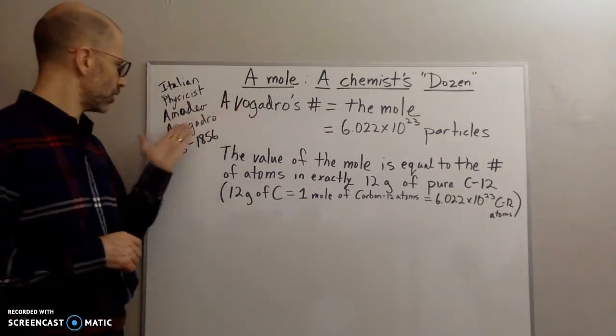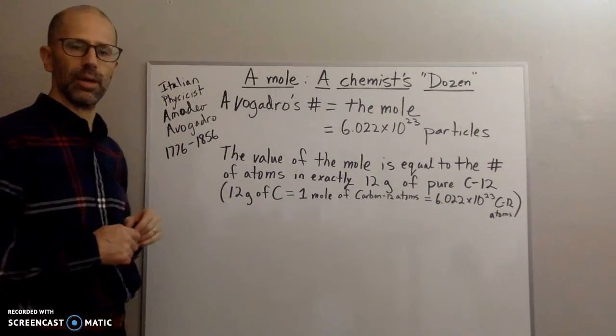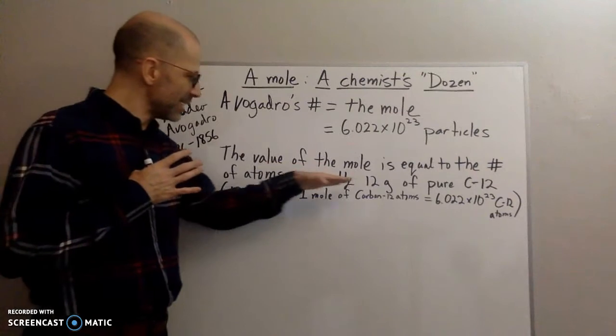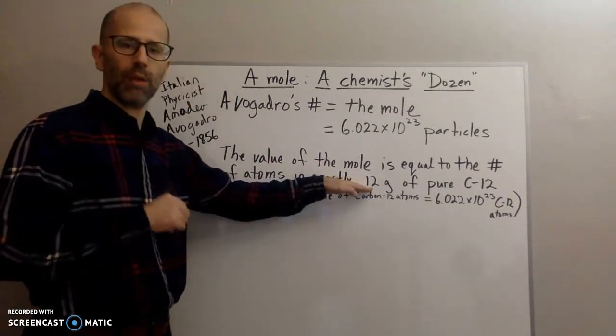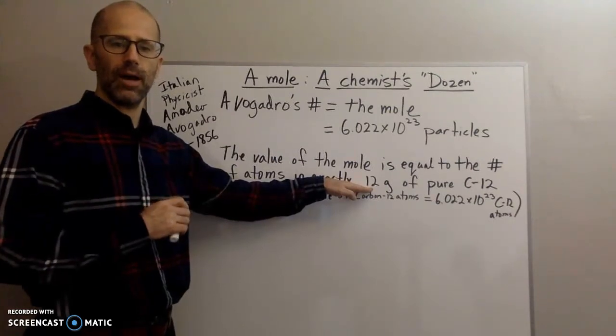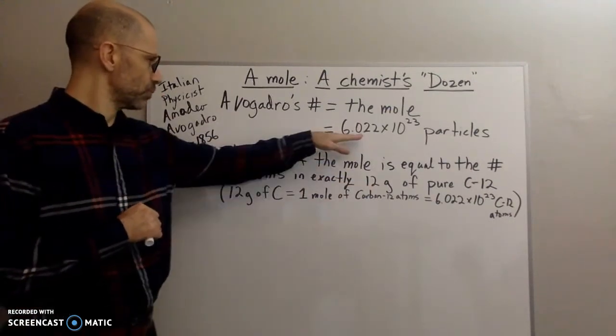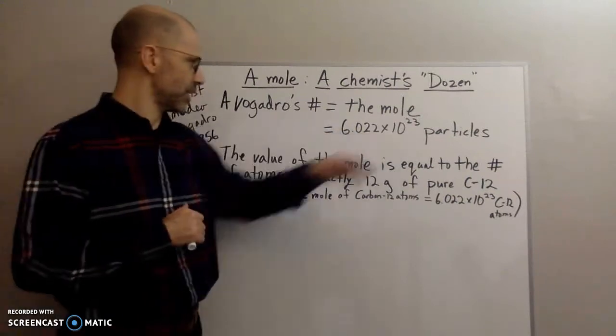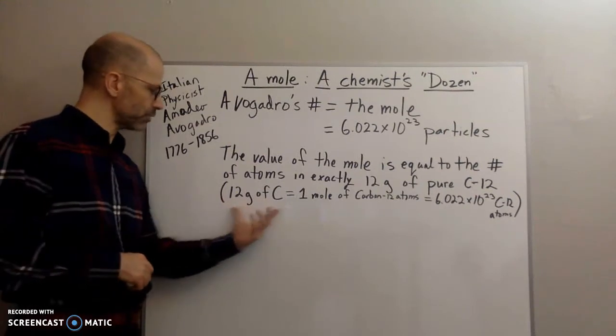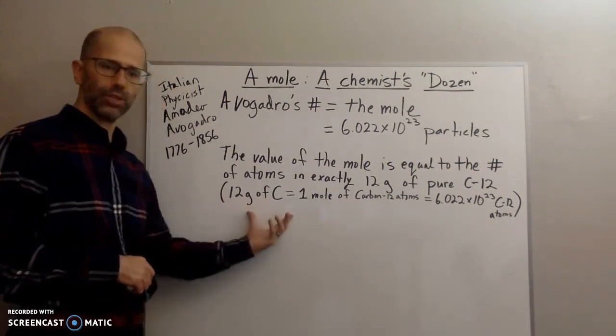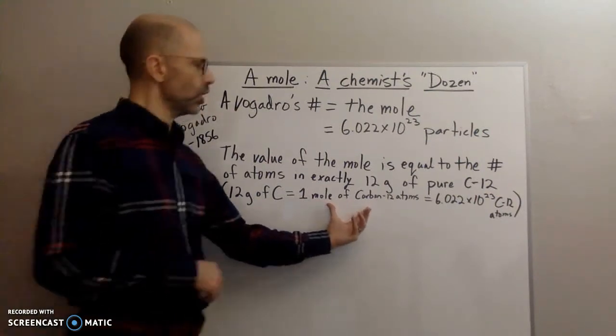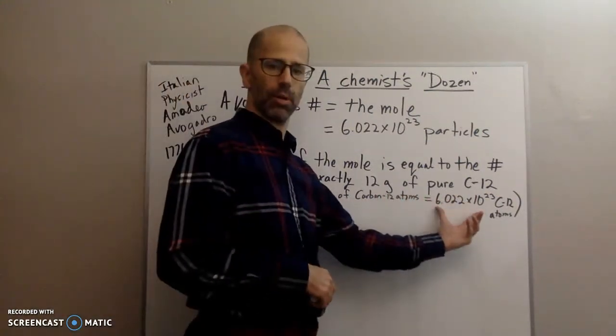That was a number that was determined by Amadeo Avogadro. So exactly 12 grams of carbon 12 is the number of atoms equal to 6.022 times 10 to the 23rd particles. So here we have 12 grams of carbon 12. That is going to be equal to one mole of carbon 12 atoms, which is equal to this number.